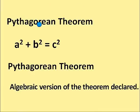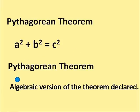Pythagorean Theorem, a squared plus b squared equals c squared. Pythagorean Theorem, algebraic version of the theorem declared.